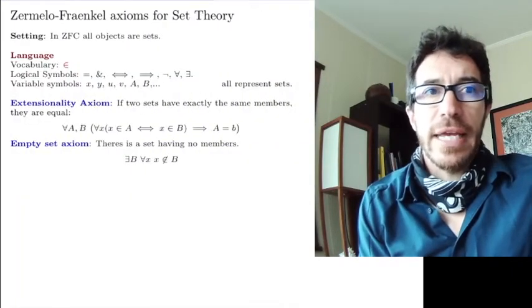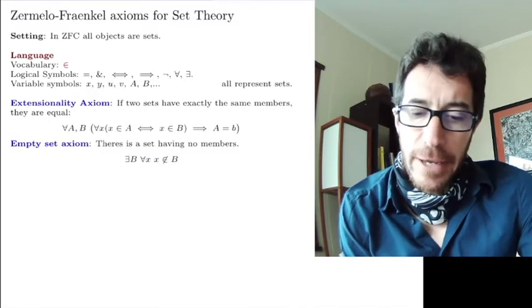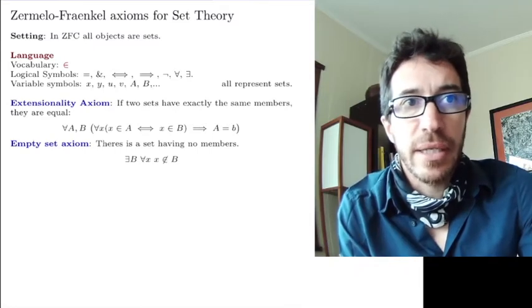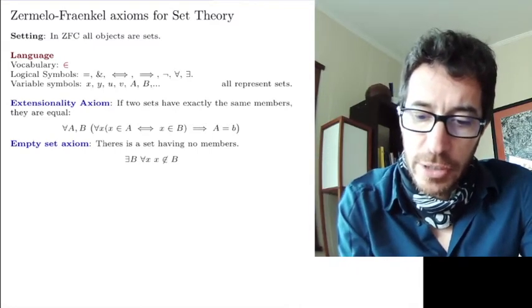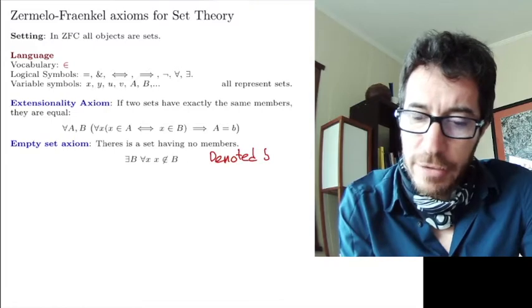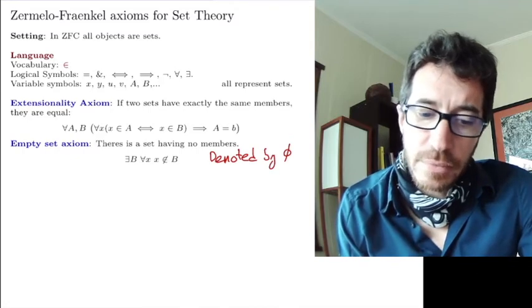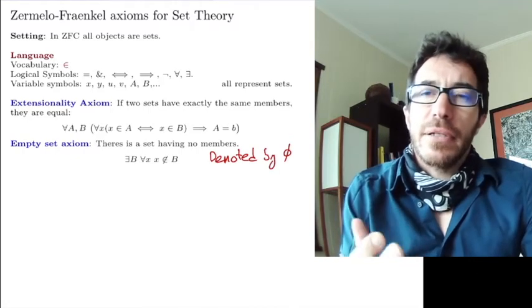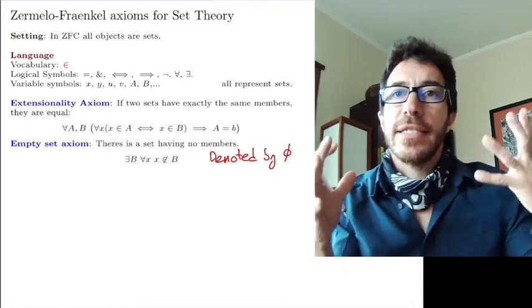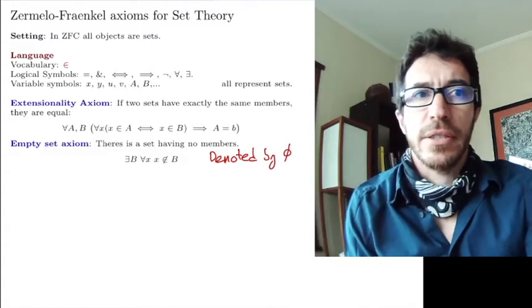Second axiom, the empty set axiom. It says there is a set that has no members. Okay? So we mentioned this one last time too. And the way you write it: you say there exists a set B, of course everything is a set, so there exists a set B such that for every x, x does not belong to B. And we are going to denote it by the Greek letter phi, that's the empty set. We mentioned that last time. Essentially, this axiom is just saying there is something. I mean, you can derive that there is an empty set from other axioms too. But the importance of this axiom is to say there exists something.